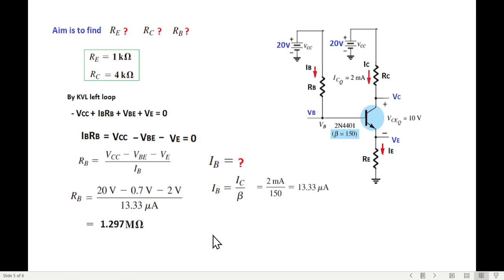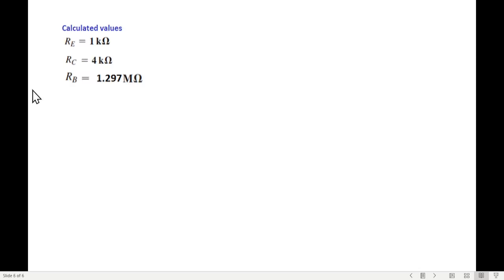So this is the calculated answer. But if you go to the market and ask the shopkeeper to give you 1.297 megaohms resistor, then the shopkeeper will look at you - where are you coming from, which university? So basically what we do, next slide we'll see.